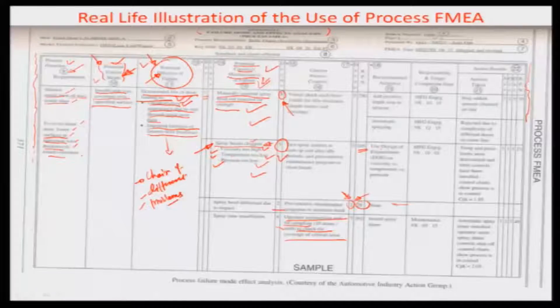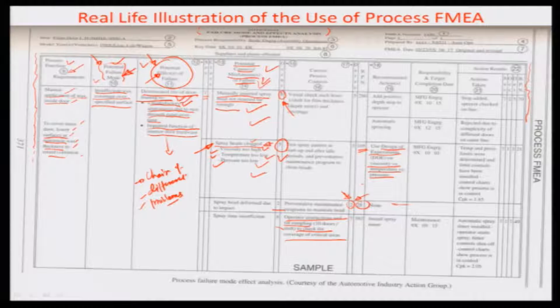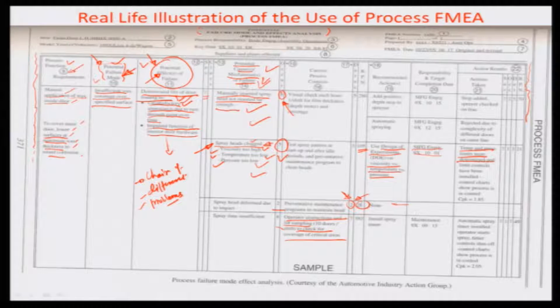The process engineer decided to use a DOE — design of experiments — scheme to optimize the various parameters related to temperature, viscosity, and pressure. An optimization was carried out and solutions were provided for the ideal ranges of these values. Manufacturing engineering was given a target date to implement this, and temperature and pressure limit controls were subsequently installed.